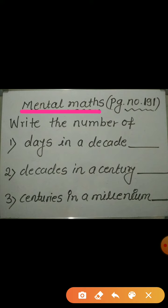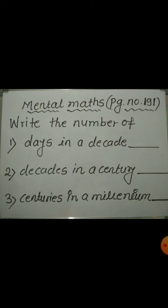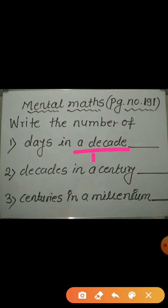Based on this, we have a mental maths given in your textbook on page number 191. Write the number of days in a decade. Children, just now we have seen 1 decade is equal to 10 years and in 1 year there are 365 days. So how many days will come in 10 years? 1 year is equal to 365 days. Therefore, 10 years is equal to 3650 days. So, days in a decade are 3650.